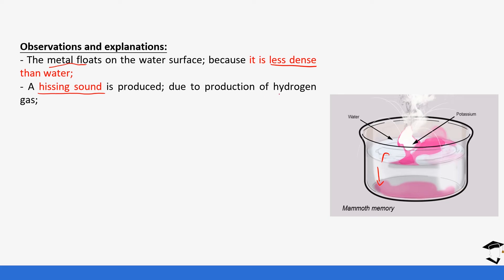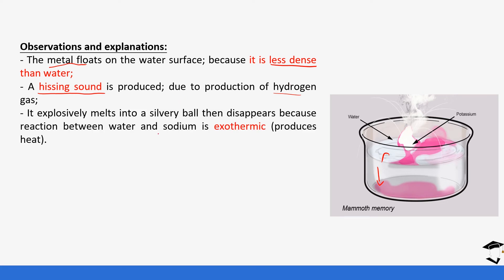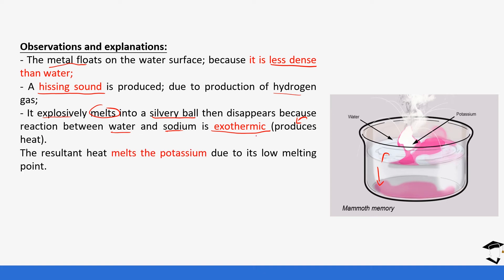The next observation is that a hissing sound is produced. This hissing sound is produced because of the production of hydrogen gas; there is hydrogen gas being produced in the process, and it comes in the form of a hissing sound. Next, after some time the metal melts in an explosive manner — not quietly — into a silvery ball. This silvery ball then disappears because the reaction between water and potassium is very exothermic, meaning it produces a lot of heat. This heat causes the potassium to melt very quickly because its melting point is very low.